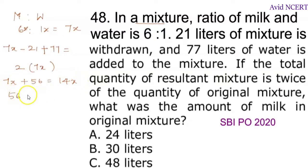So 56 equals 14x minus 7x, so 56 equals 7x, where x equals 56 divided by 7, which is 8. So x value here is 8. Now the question here is amount of milk in the original mixture.